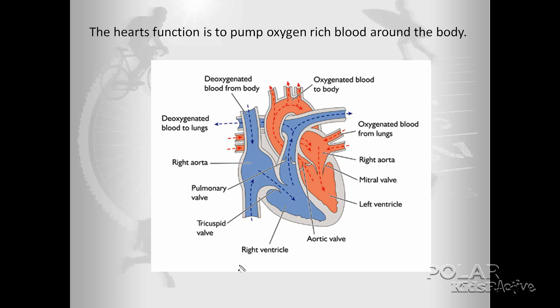The right side of the heart receives deoxygenated blood from the body and pumps this deoxygenated blood to the lungs. The left side of the heart receives oxygen rich blood from the lungs and pumps the blood to the rest of the body.